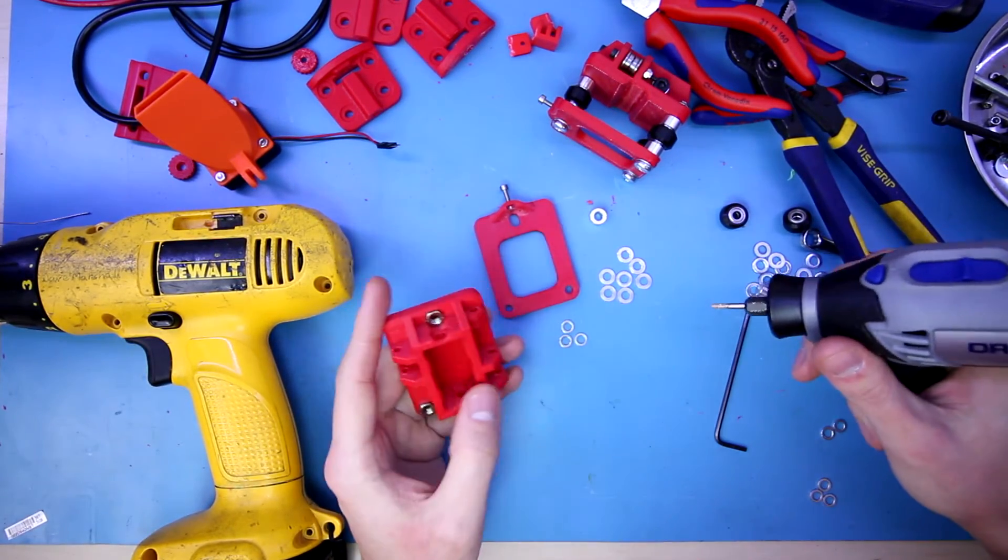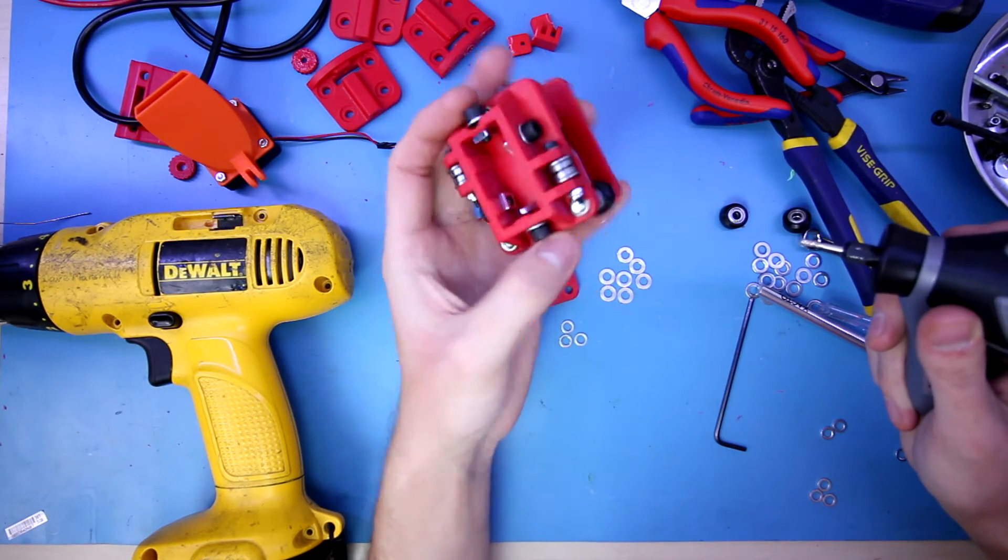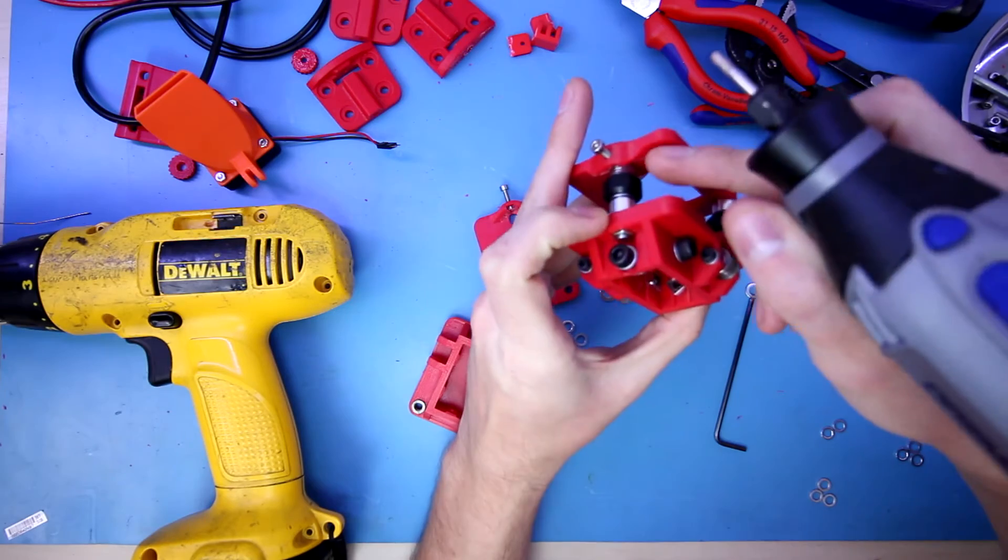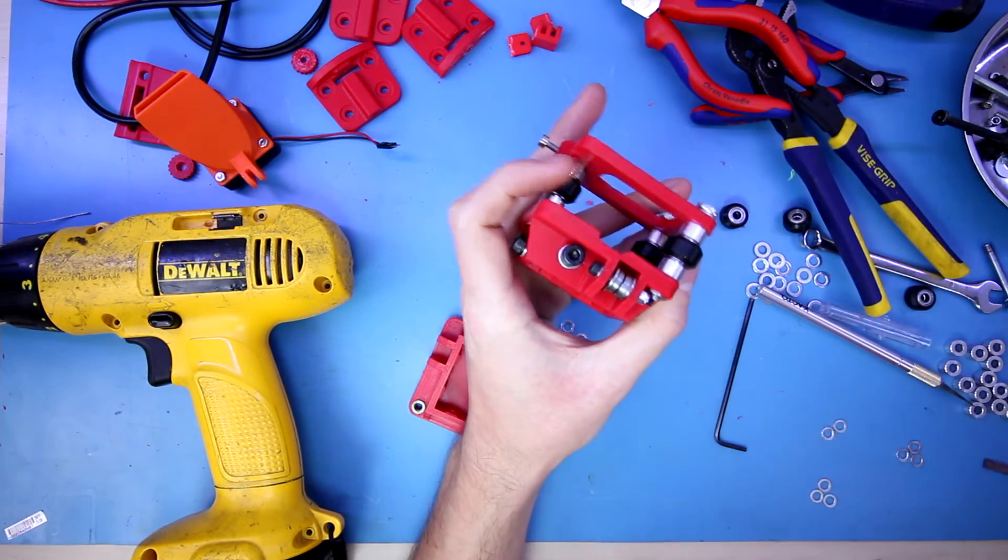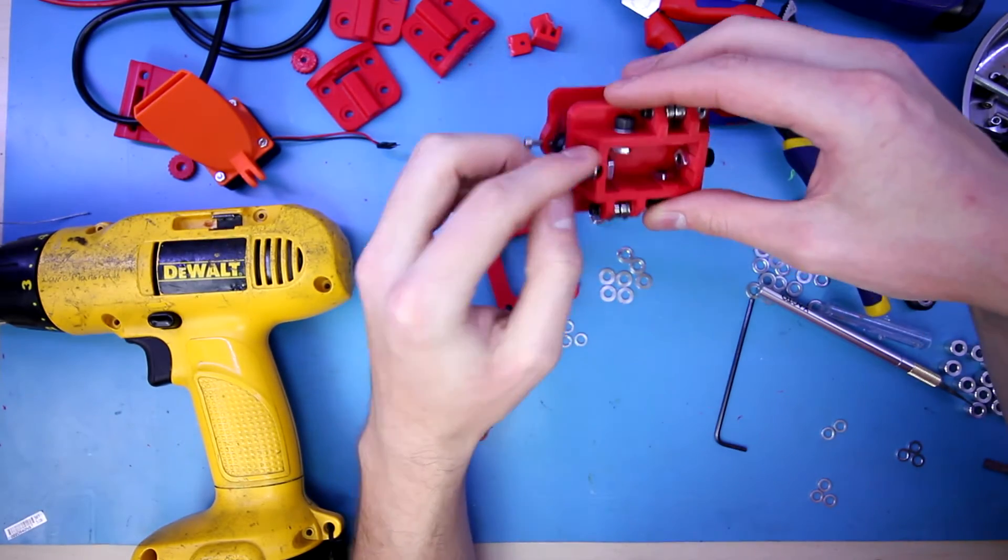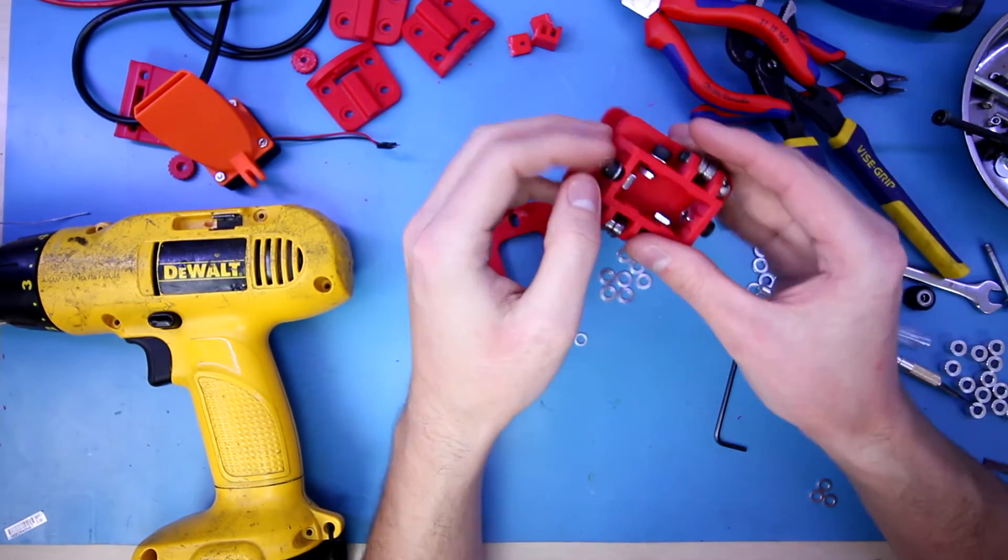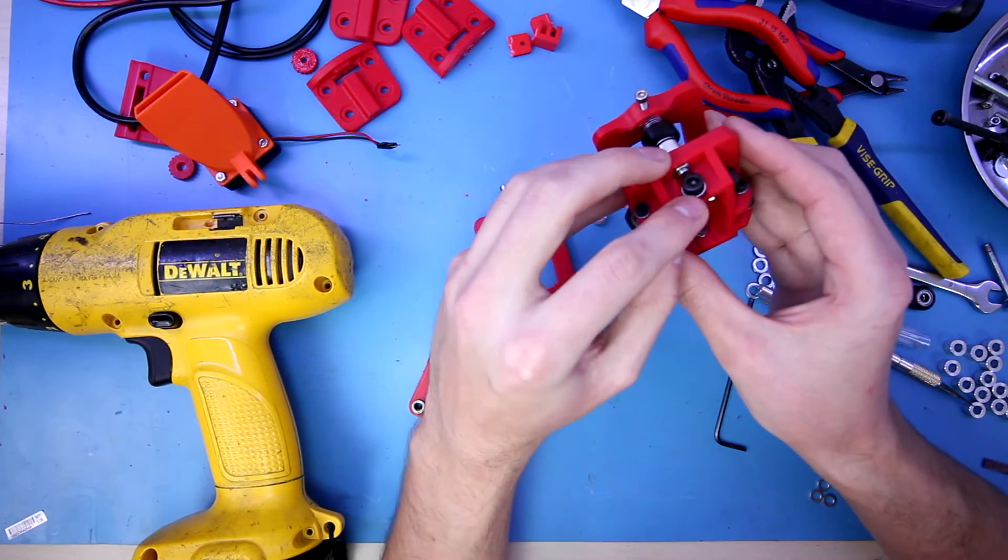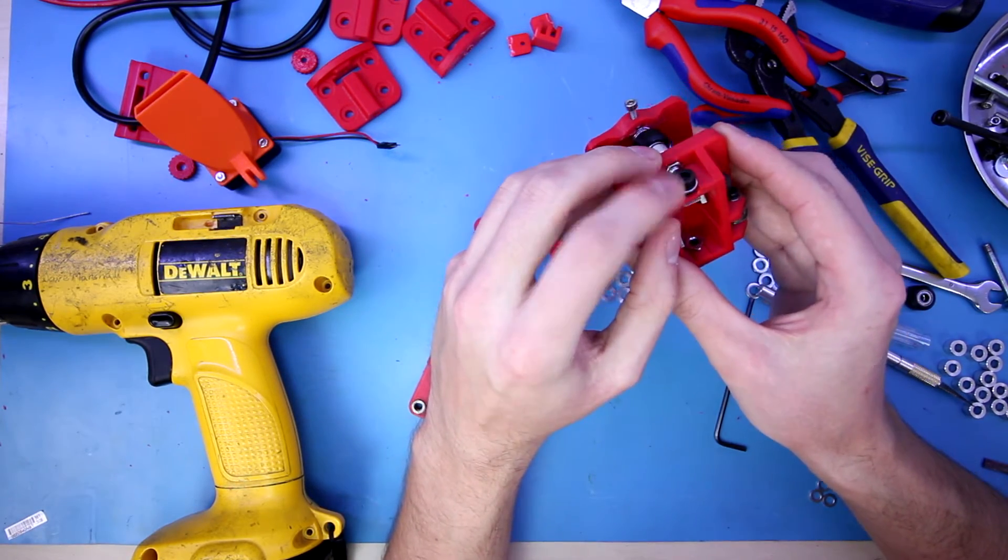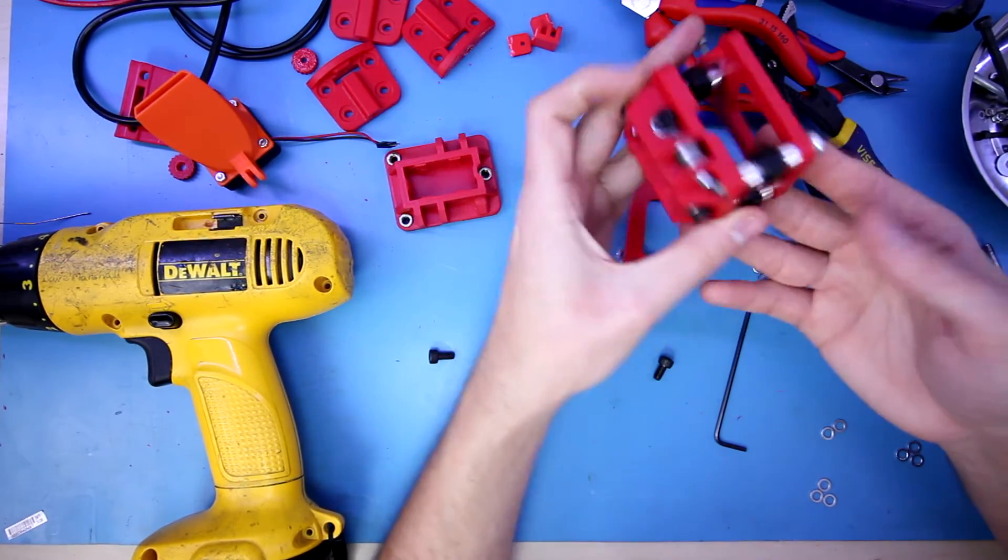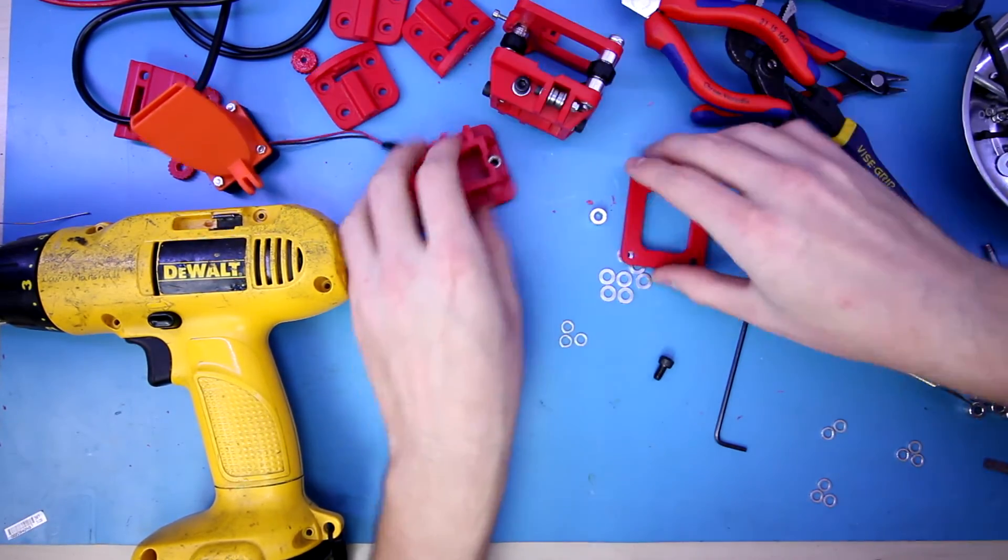I went ahead and got everything reassembled together here. My real critique on the model besides me having to sand down those bits there is this particular screw hole has like a weird indention which isn't really ideal. I'd have to get a lot smaller of an M5 screw for that, but I went ahead and just improvised with a washer. Hopefully that'll be okay.